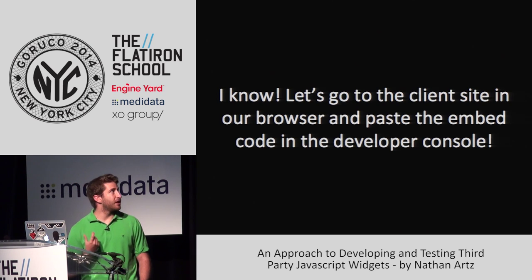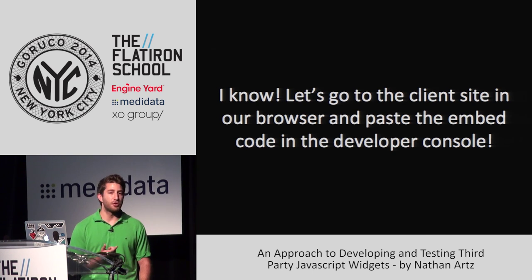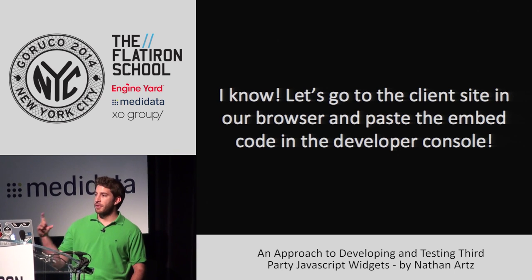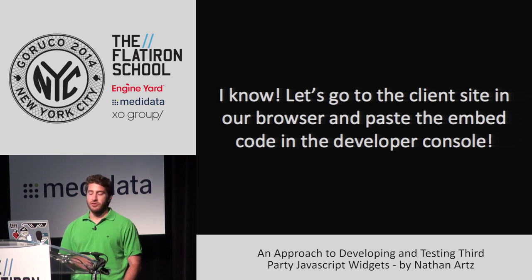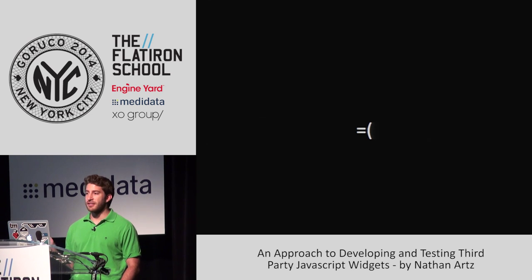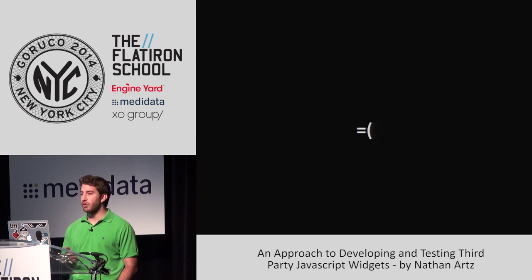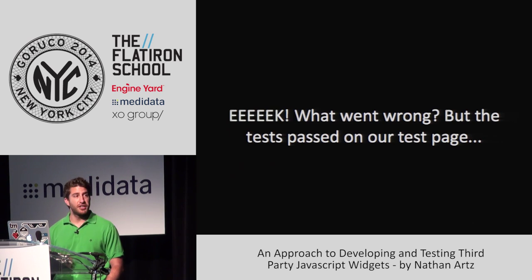So you kind of have that pit in your stomach — my JavaScript is great, it works, but anyone I give it to at any point, it could break. Maybe you have an idea: let's go to the client page, open the Chrome developer console, copy and paste our embed JavaScript in there. Theoretically, that should embed our JavaScript on the page and we can debug. But when we do that, it doesn't work — we get some syntax errors, something's going wrong. All we know is that our JavaScript really isn't working on this page, and if the client puts it on tomorrow, it's going to break, even though all of our tests passed.